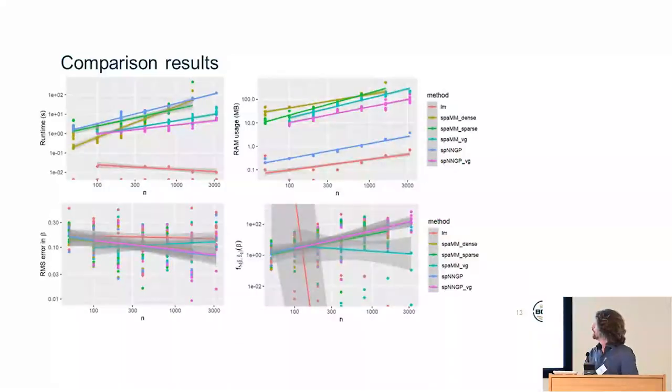So what are the results? So here we have plots of the amount of time taken to run this model fit on the left, the peak usage of RAM during that fitting on the bottom left, it's the root mean squared error in the coefficients, and on the bottom right, it's the likelihood of seeing the test data under the fitted model result. So taking into account what the model output thinks are the two coefficients, and also what the fitting uncertainty about the coefficients are.